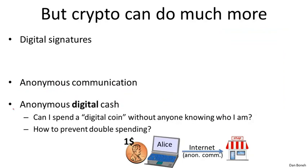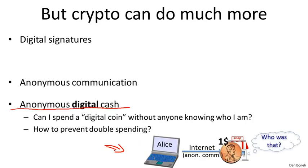One example is anonymous digital cash. In the physical world, if I have a physical dollar, I can walk into a bookstore and buy a book, and the merchant would have no idea who I am. The question is whether we can do the exact same thing in the digital world. Alice might have a digital dollar coin and want to spend it at some online merchant, and what we'd like is that when she spends the coin, the bookstore has no idea who Alice is — providing the same anonymity as physical cash.